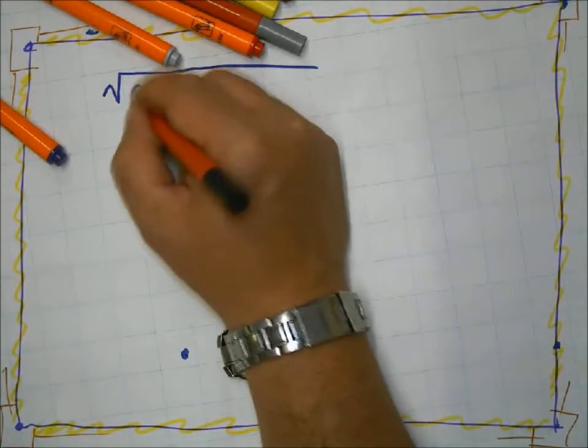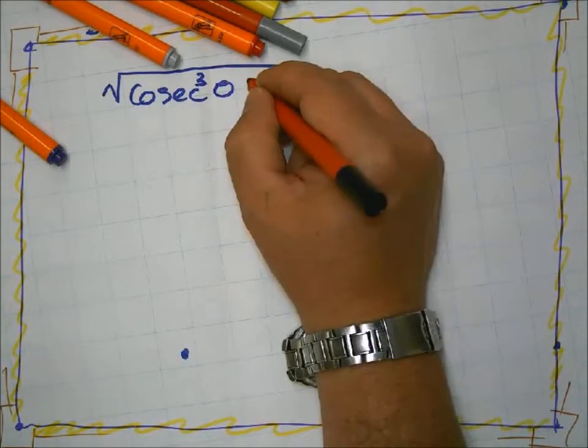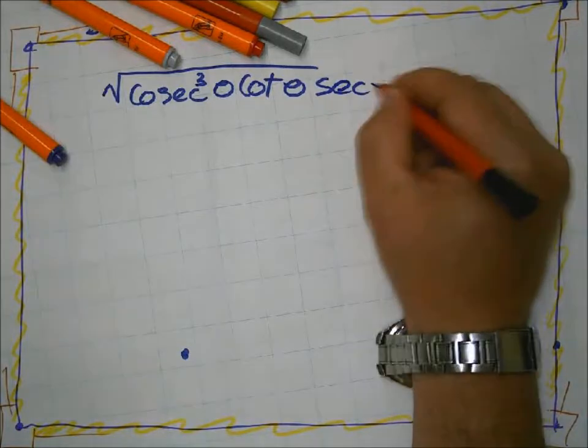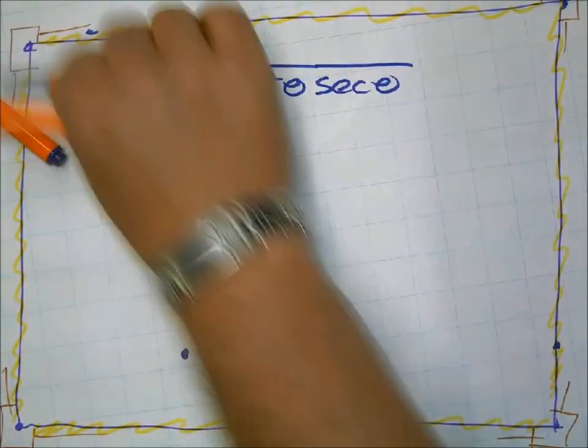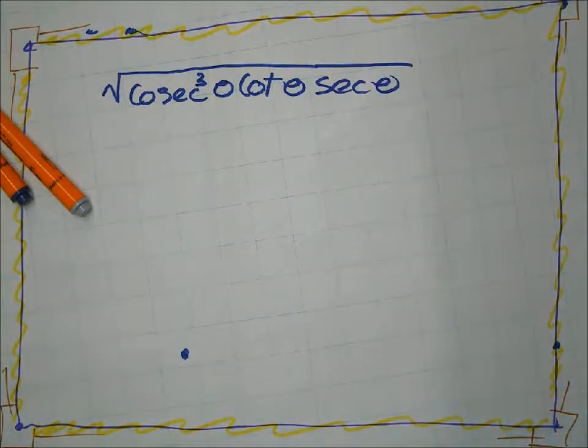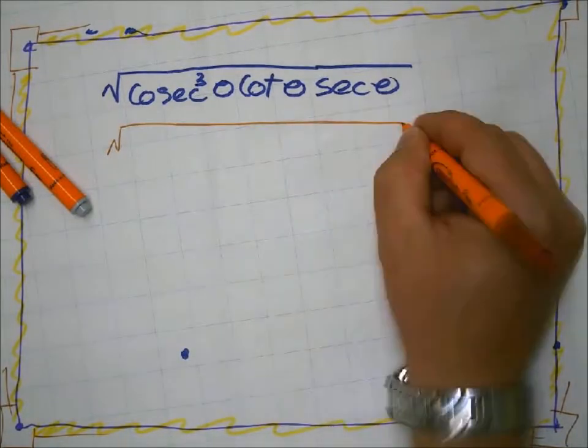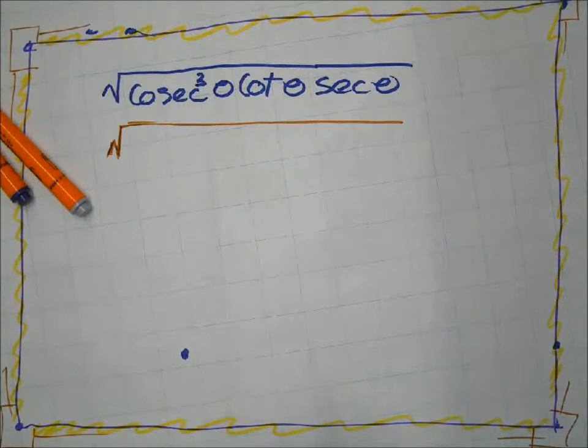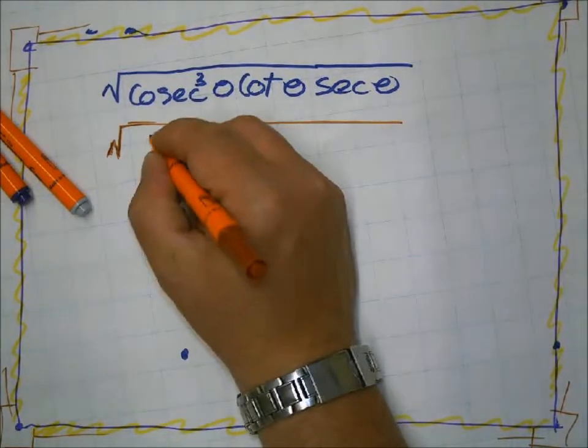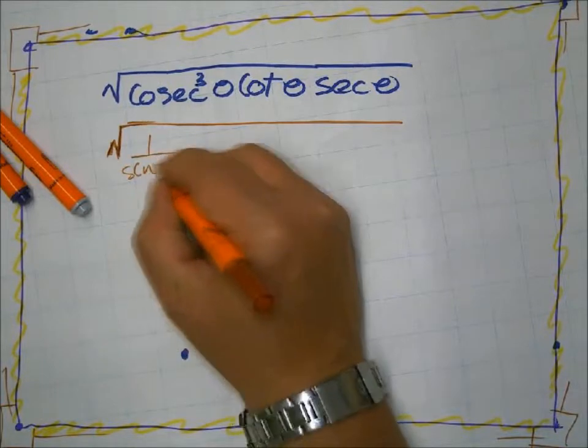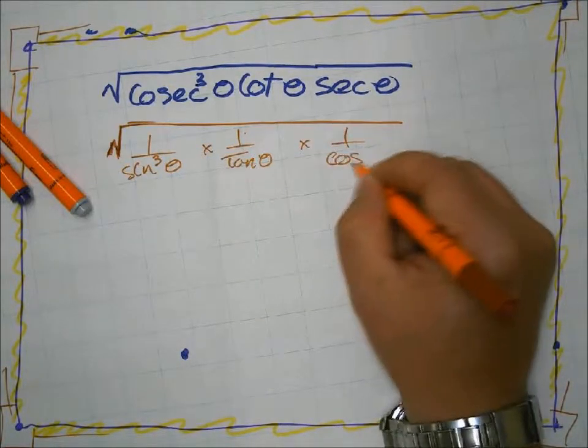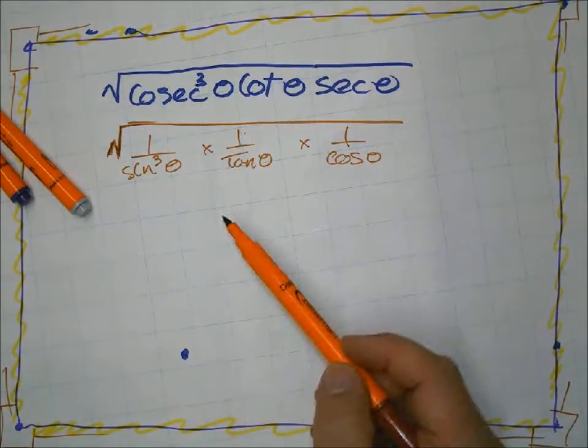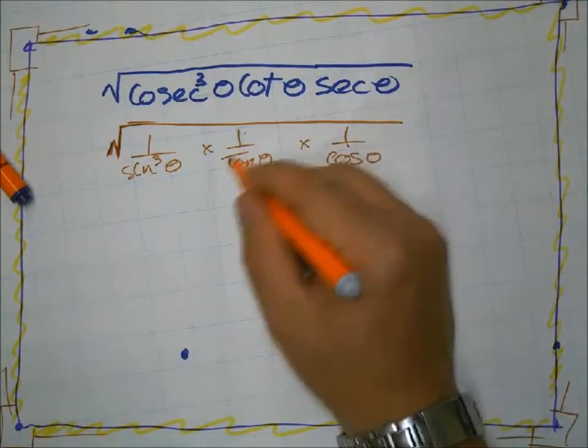Which is the square root of cosec cubed theta times cot theta and sec theta. Since that cosec is a problem, what do we think we should do? We're still not really that familiar with dealing with cosec and cot and sec, so if we go one over sine cubed theta times one over tan theta times one over cos theta, that doesn't seem to be giving us anything except the tan.